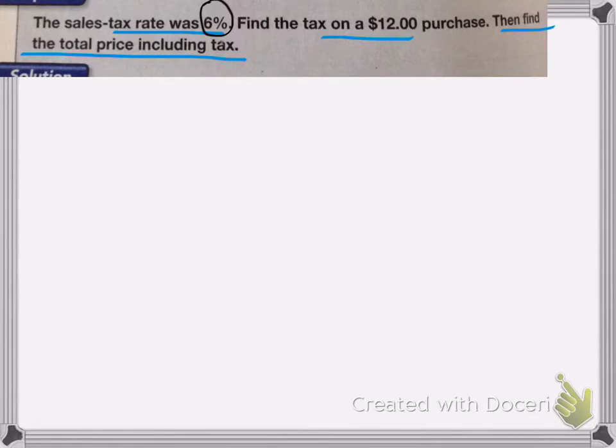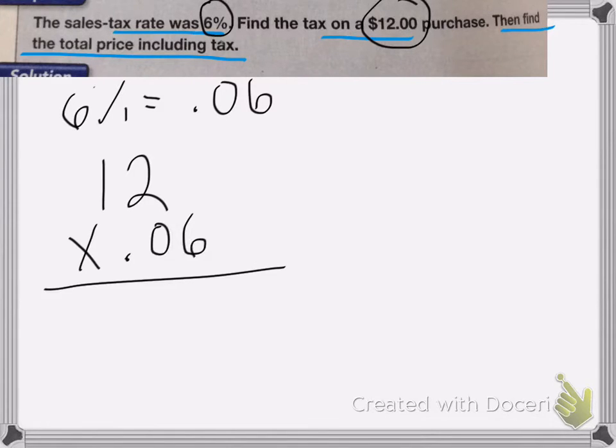So we're going to have 6% is equal to 0.06. So we're going to multiply 12 by, or 12 times 0.06.